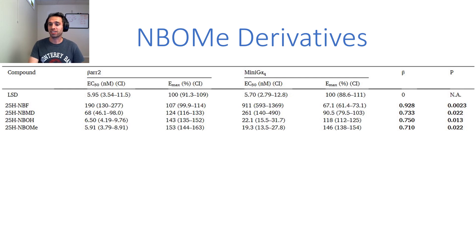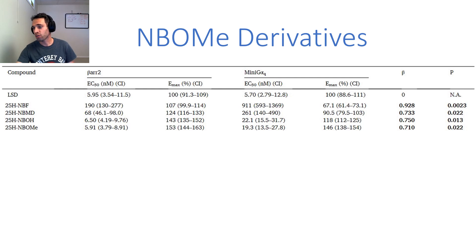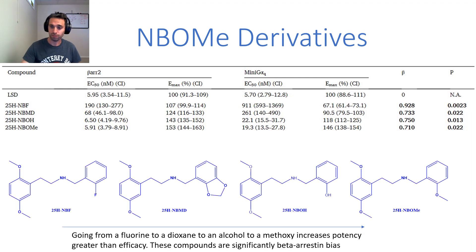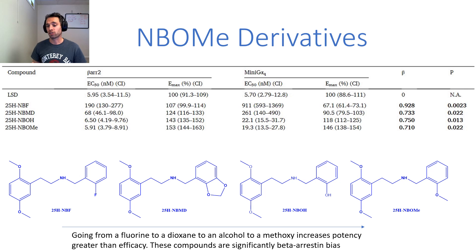We see basically the same results in the G protein pathway. We should note that with the beta factor being much greater than zero, these non-iodinated NBOM compounds are significantly beta-arrestin biased. Structurally, going from a fluorine to a dioxane to an alcohol to a methoxy increases potency greater than efficacy, and these compounds are significantly beta-arrestin biased over G protein biased.